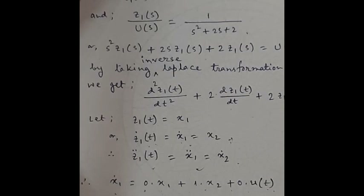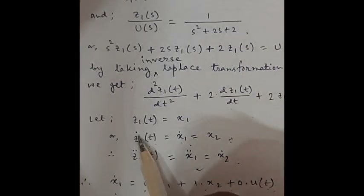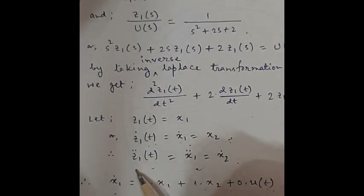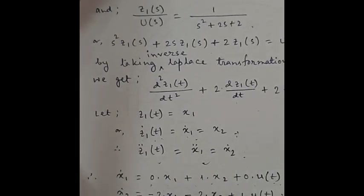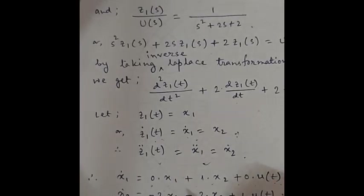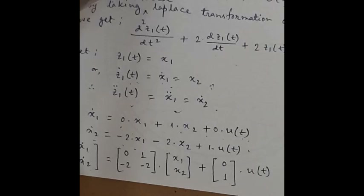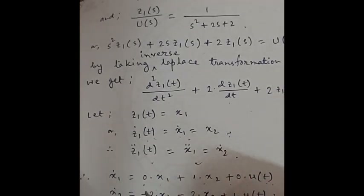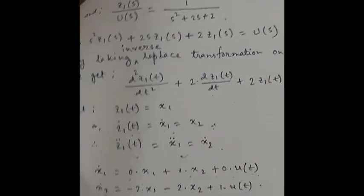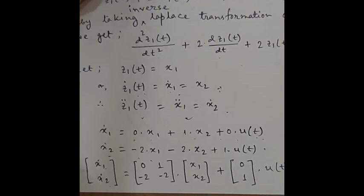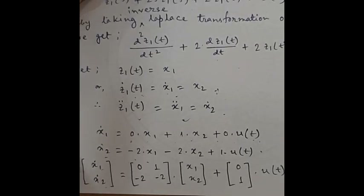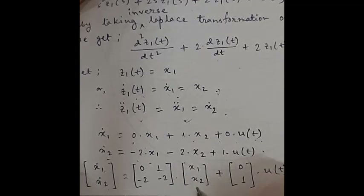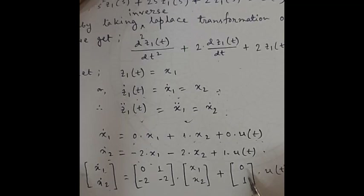We assume z1(t) = x1 as a state variable, so ż1(t) = ẋ1 = x2, and z̈1(t) = ẋ1 double dot = ẋ2. Substituting into the differential equation gives: ẋ2 = −2x1 − 2x2 + u(t). From the state equation, ẋ1 = x2, so ẋ1 = 0·x1 + 1·x2 + 0·u(t). From these two equations, we build the matrix equation: [ẋ1; ẋ2] = [[0, 1], [−2, −2]] · [x1; x2] + [0; 1]·u(t).